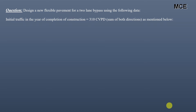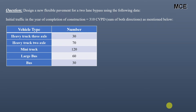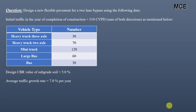Welcome back to Master Civil Engineering. In this video, you will learn how to design a flexible pavement if we know the CBR of the subgrade soil and the design traffic of the road using the IRC-37. We have to design a new flexible pavement for a two-lane bypass using the following data.